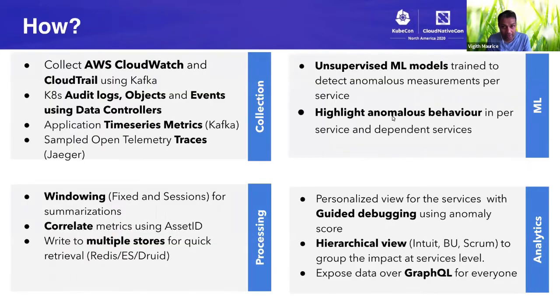How are we doing it? Fuzzy, being an ODL app, uses the same four pillars of ODL. We have collection, processing, ML, and analytics. In collection, we collect all the data that is being exposed by the cloud provider. In our case, it's AWS. We have AWS CloudWatch, CloudTrail, CloudEvents, all kinds. From the platform side, we use Kubernetes. We get the audit logs, the Kubernetes objects, object changes, the events using data controller. We have a standardized way of scraping the metrics, that is via Prometheus. So any application that runs on Kubernetes, we can get the time series metrics by scraping Prometheus and we send that to Kafka. Recently, we also started getting sampled OpenTelemetry metric traces.